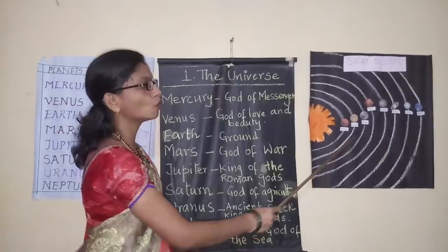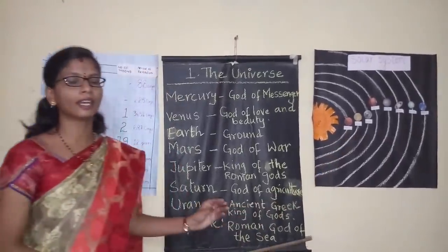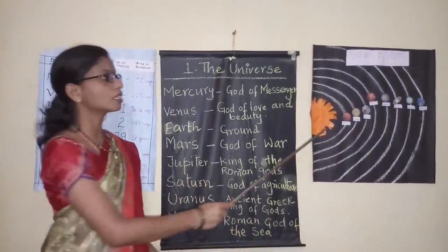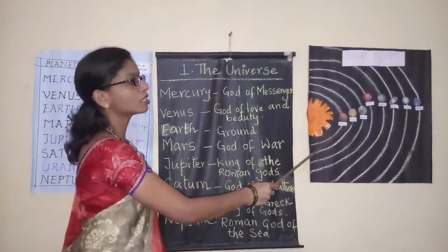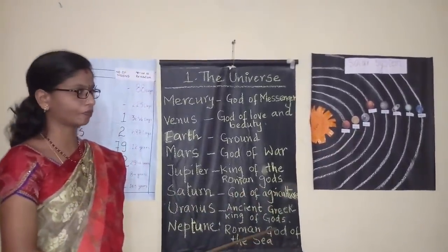Venus is the neighbour of the earth, and mostly Venus and earth both have some similar features. Venus is known as the earth's twin.